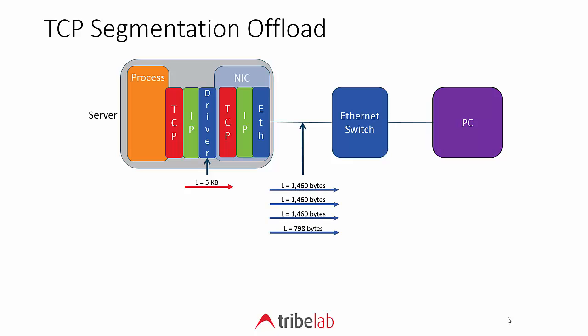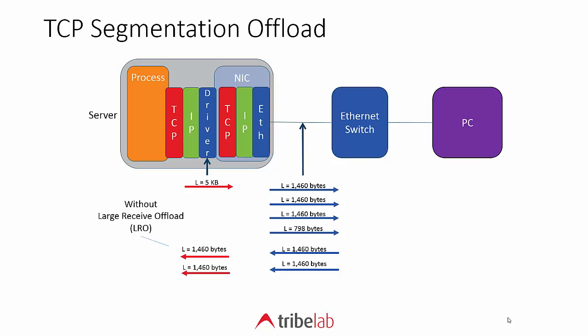What we see on the outside is four packets with a total segment length of 5 kilobytes. When data comes back from the PC — let's say 2920 bytes — that would be split across two 1460-byte packets, and those get delivered straight through the network interface card to the user process. So what we see on the trace on the server is those 1460-byte segments passing straight through the NIC. This assumes we're not using large receive offload, which can repackage multiple packets into one large packet.